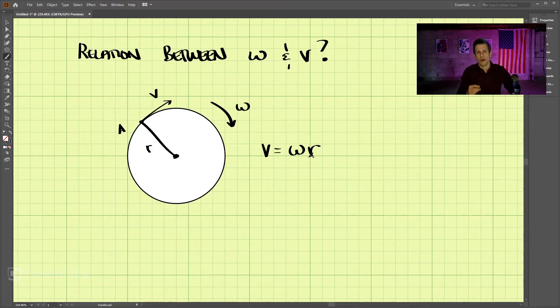Now, if we want to use a vector formulation here, and this usually applies to 3D scenarios, we can do that. So let's talk about the vector formulation of the relationship between angular velocity and velocity.